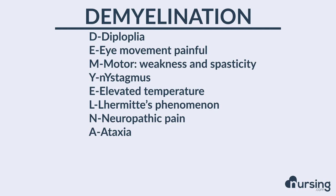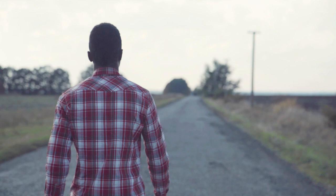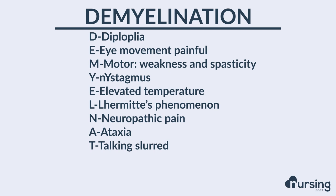A stands for ataxia. Patients with multiple sclerosis can sometimes feel ataxic — like they're about to fall over or feel unsteady. That may be a sign you need to investigate further. T stands for talking slurred. Anytime a patient has slurred speech, be suspicious they may have multiple sclerosis, especially if accompanied by any of these other symptoms.